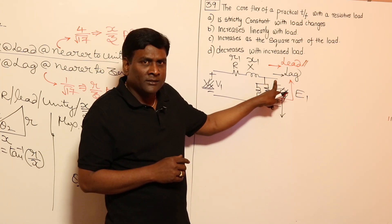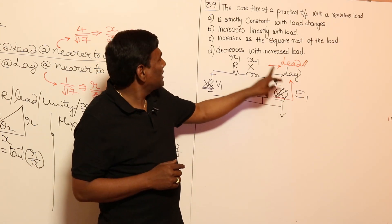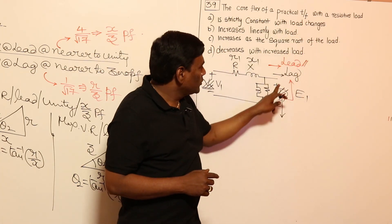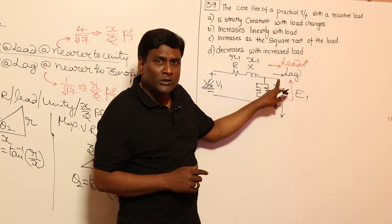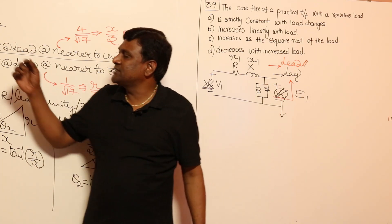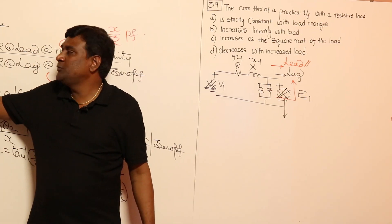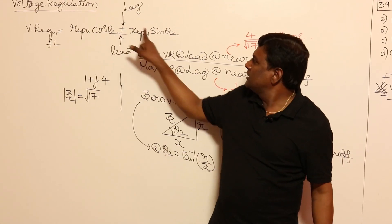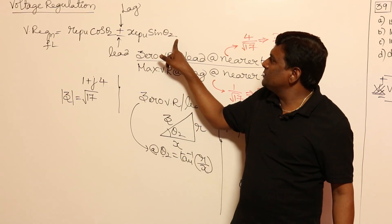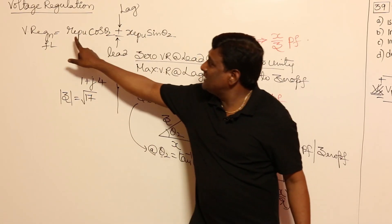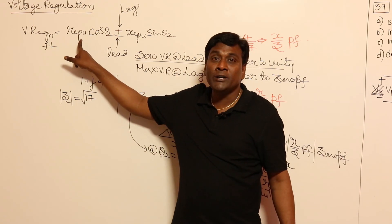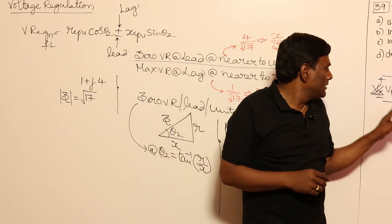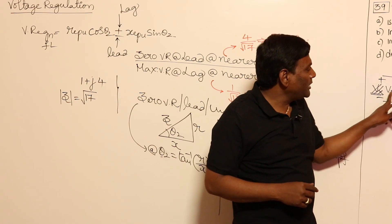At unity power factor, cos(θ₂) = 1 and sin(θ₂) = 0, so the reactive term vanishes. However, the resistive voltage drop Re_pu is still present, meaning voltage regulation is still positive and non-zero. So even at unity power factor, the load voltage V₂ is slightly less than the no-load voltage, confirming flux is not strictly constant.